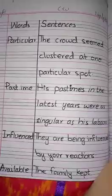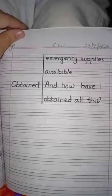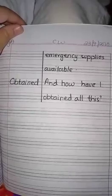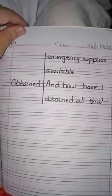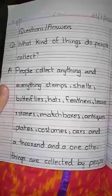Available: 'The family kept emergency supplies available.' Obtained: 'And how have I obtained all this?' On the next page you will write question answers.